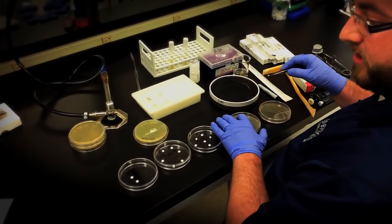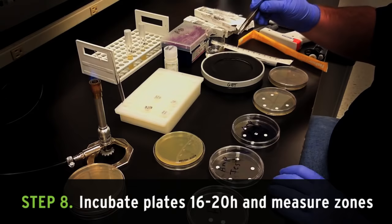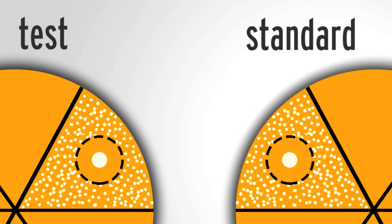After all the discs are placed, incubate the plates inverted overnight, and then after around 16 to 20 hours, measure the zones of inhibition around each disc. If the test discs match or exceed the standard, then your product is working correctly and you'll be able to use them for other experiments.